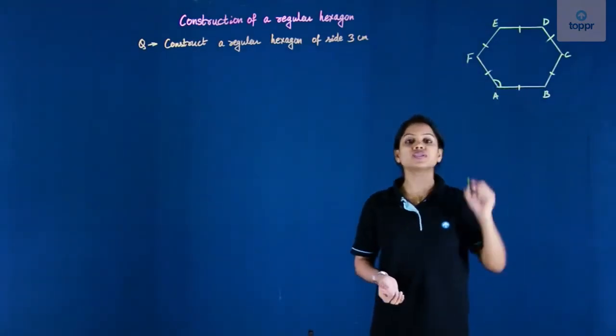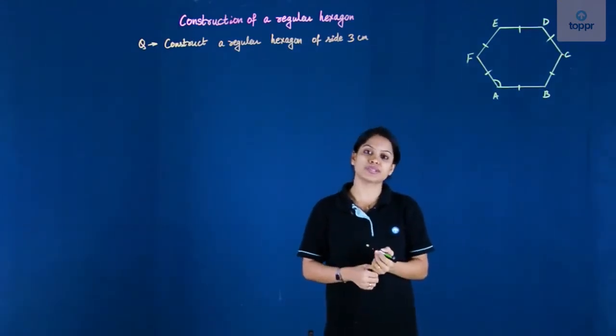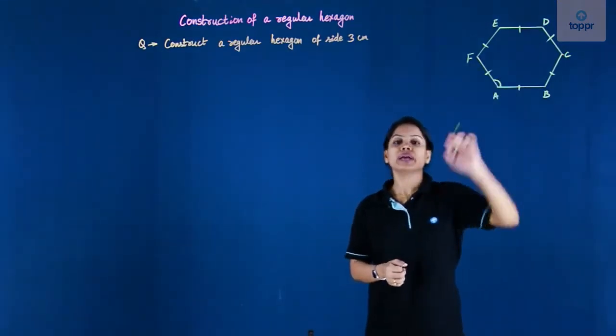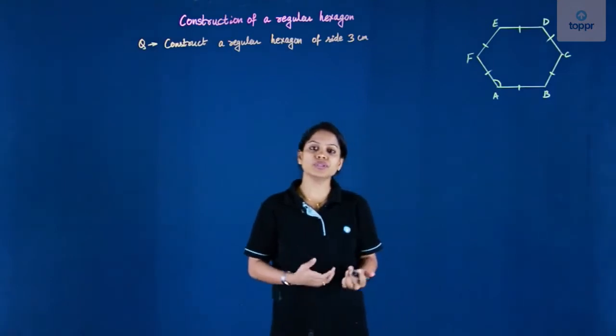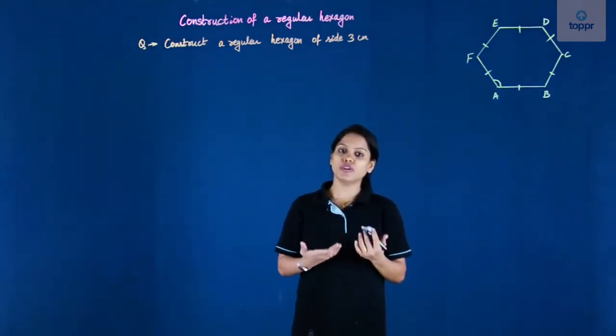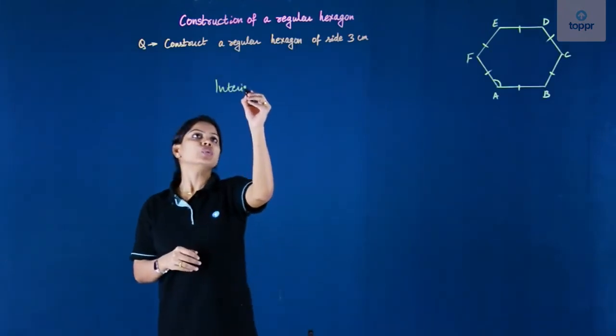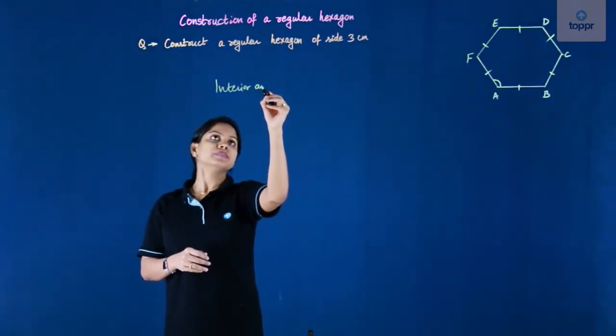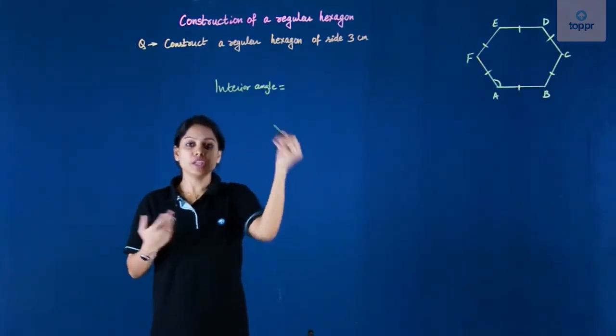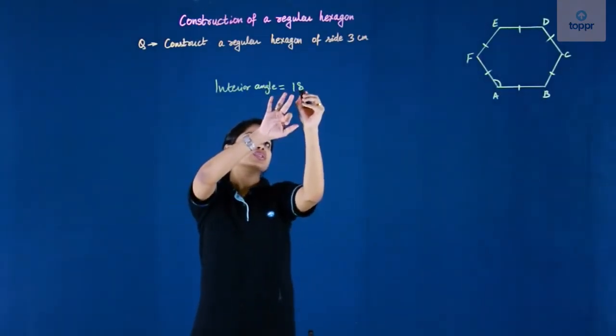Now this angle here is called the interior angle of a hexagon. The interior angle of a hexagon can be calculated using a formula. We have a formula to calculate the interior angle which goes like this: the interior angle of any polygon can be calculated using this.